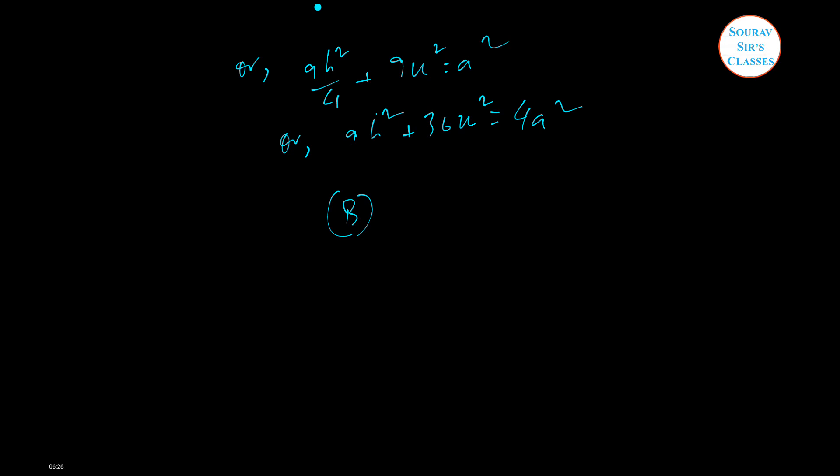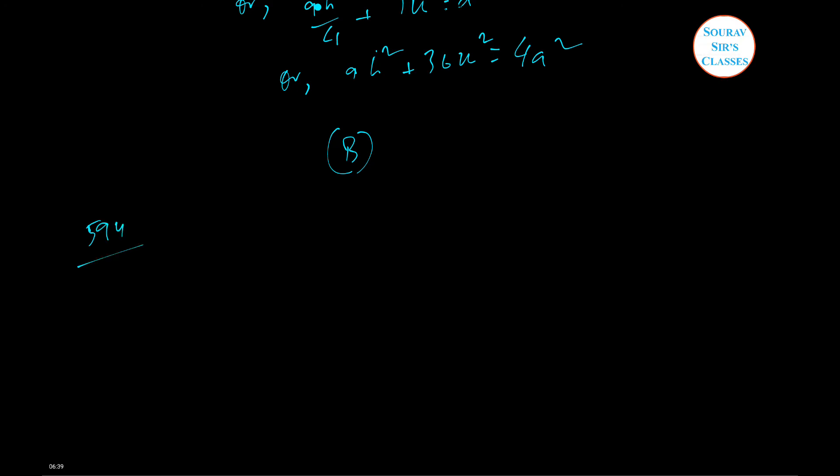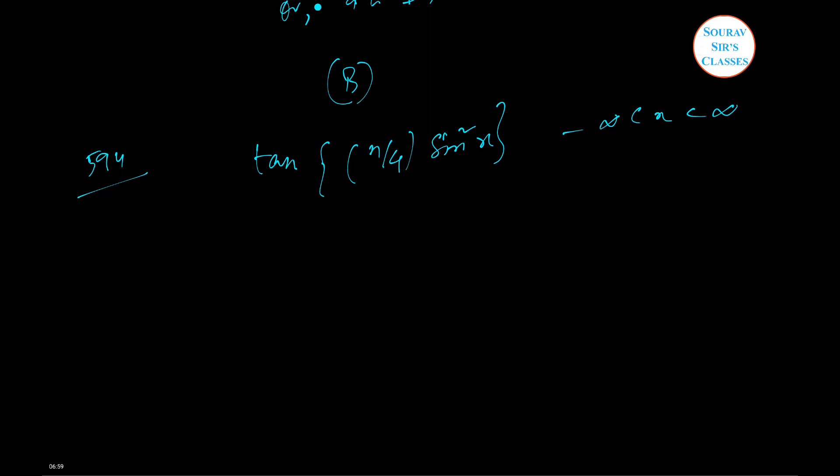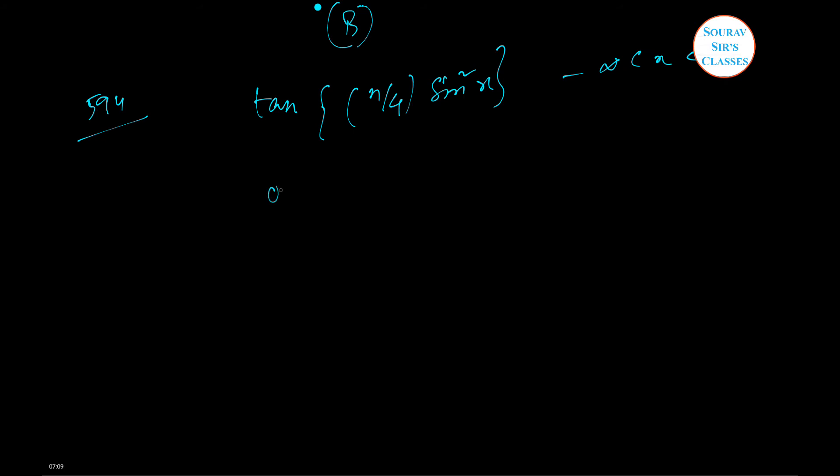The next question is a trigonometry question, number 594. The question is tan of pi by 4 into sin square X. This value lies between which interval? That's the question.